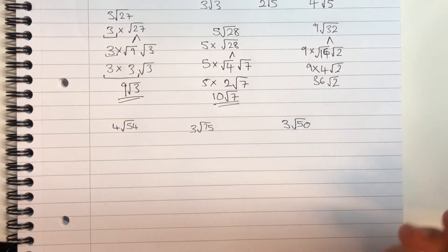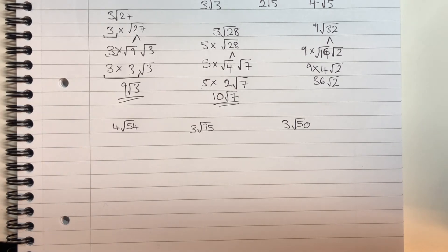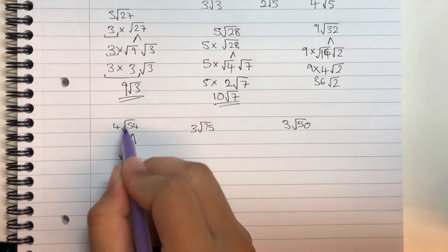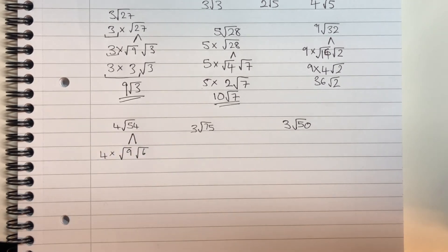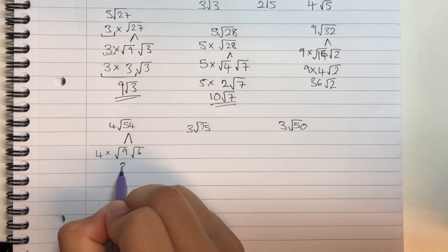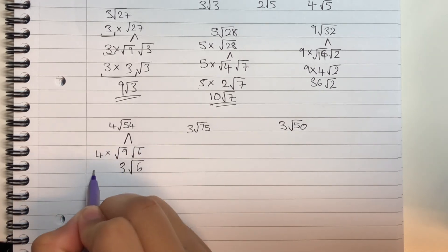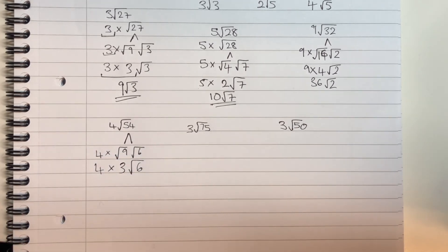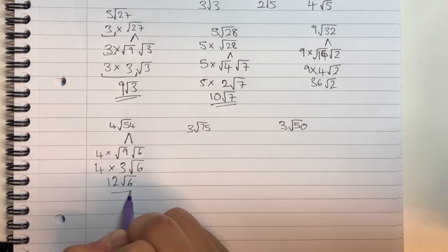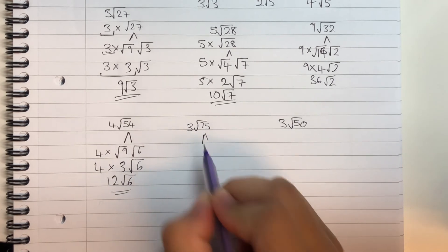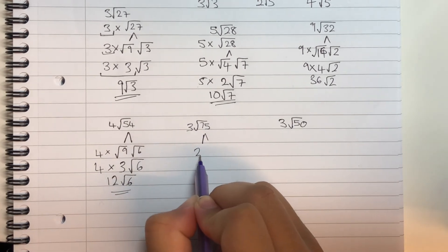Pause the video, have a go, then let's go through them. For 4 root 54: the biggest square number is 9. 54 divided by 9 is 6. Root 9 simplifies to 3, and root 6 stays. The 4 multiplies by 3 to give 12, leaving 12 root 6.